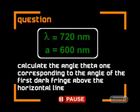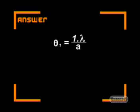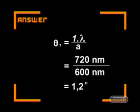See if you can use this equation to solve the following problem. The wavelength of red light is 720 nm. If this light is shone onto a slit that has a width of 600 nm, calculate the angle theta 1 corresponding to the angle of the first dark fringe above the horizontal line. Let's go through it together. We can use the equation theta 1 equals plus 1 times lambda divided by a. If we insert the given values into this equation, we find that the value of the angle is 1.2 degrees. Now that we know the angle to the first dark fringe, we can use trigonometry to calculate the distance from the center of the bright patch on the screen to the first dark fringe if we also know the distance between the slit and the screen.